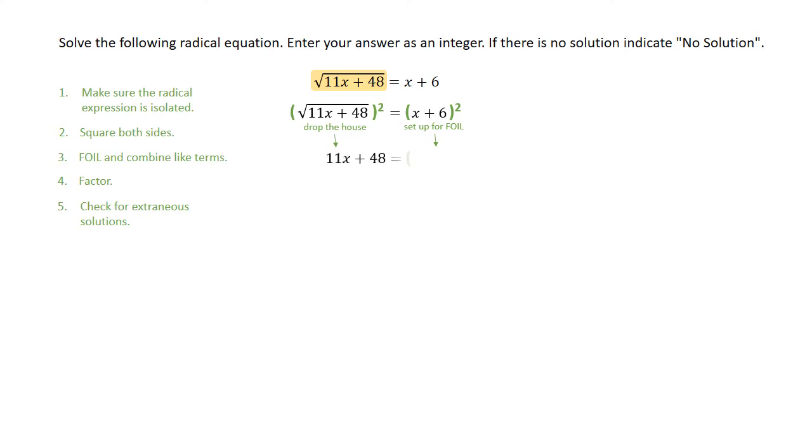So setting up for the foil, you could write these separately, or you might know how to foil in your head, which is fine. We are going to multiply those two x's together, and I get x squared. We have an inner 6x, we have an outer 6x, and 6 times 6 is 36.